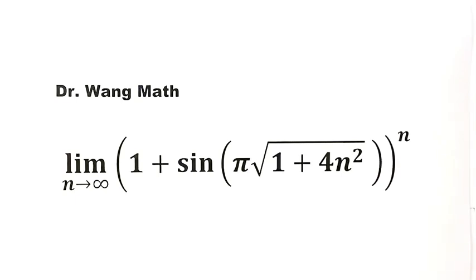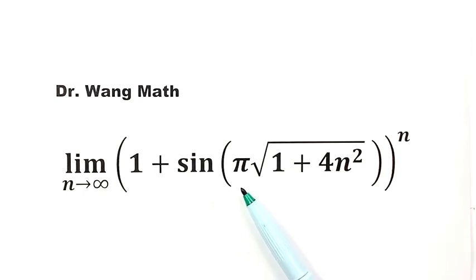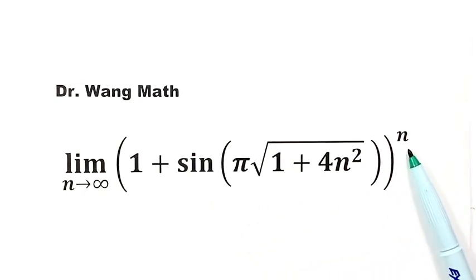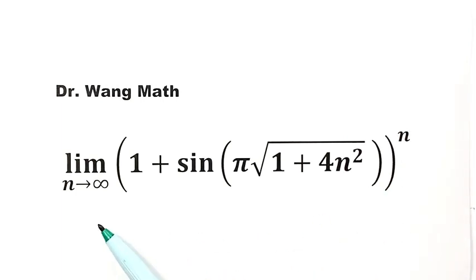In this video, we're going to solve a limit problem: the limit of (1 + sin(π√(1 + 4n²)))^n as n goes to infinity.